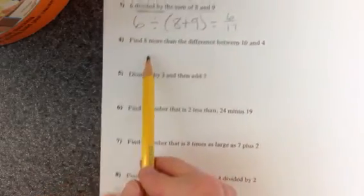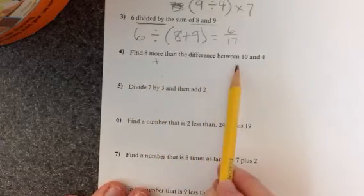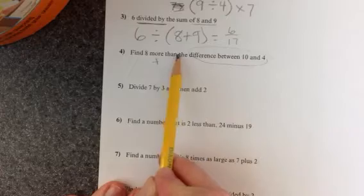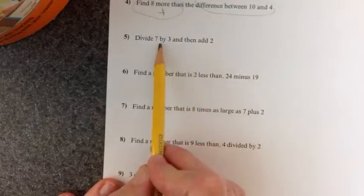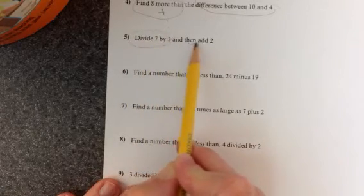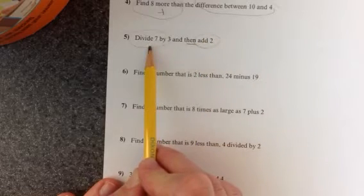So you're going to go ahead and do this one. Find 8 more than the difference between 10 and 4. Difference, here's one part, here's the other part. And then make sure where you put them. Divide 7 by 3 and then add 2. So we don't want to add 2 until after we do this.